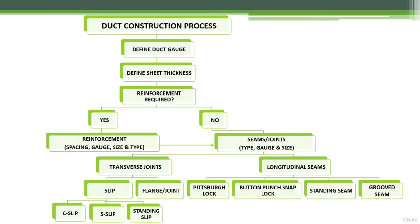This figure from SMACNA duct construction standards summarizes the entire process and shows how everything is interconnected. You start with duct width, specify sheet metal thickness and pressure gauge, check if reinforcement is required, check reinforcement spacing requirements, and finally specify the type and specifications of the joints and seams. At that point, you have completed the duct construction process in accordance with SMACNA.